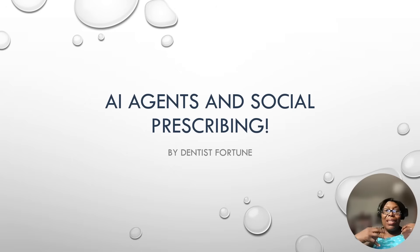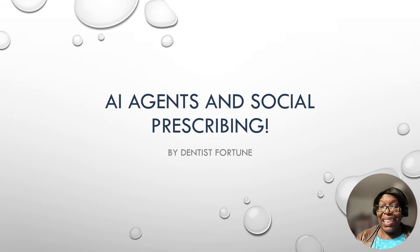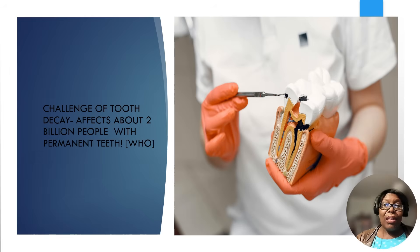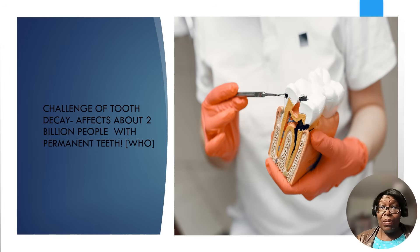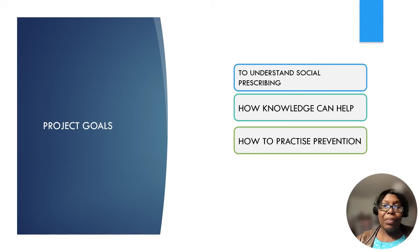Today we're talking about AI agents and social prescribing. Please stay till the end because I'll be sharing gems. According to the World Health Organization, 2DK, which is a preventable disease, affects about 2 billion people with permanent teeth. The project goals today are to understand social prescribing, how knowledge can help, and how to practice prevention.